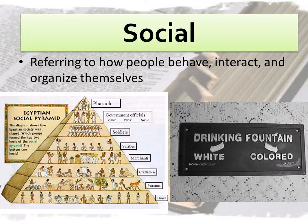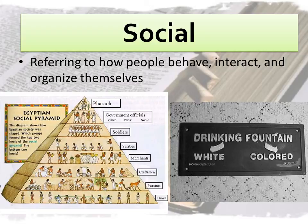Many people incorrectly think that the word social means having to do with friends, like social life, social time, or social network. In reality, the word social covers more than that. Anything having to do with how people behave, interact, and organize themselves can be called social. Social history is one of the hardest but most interesting types of history to study, and looks at how different groups of people have treated each other in the past and why.